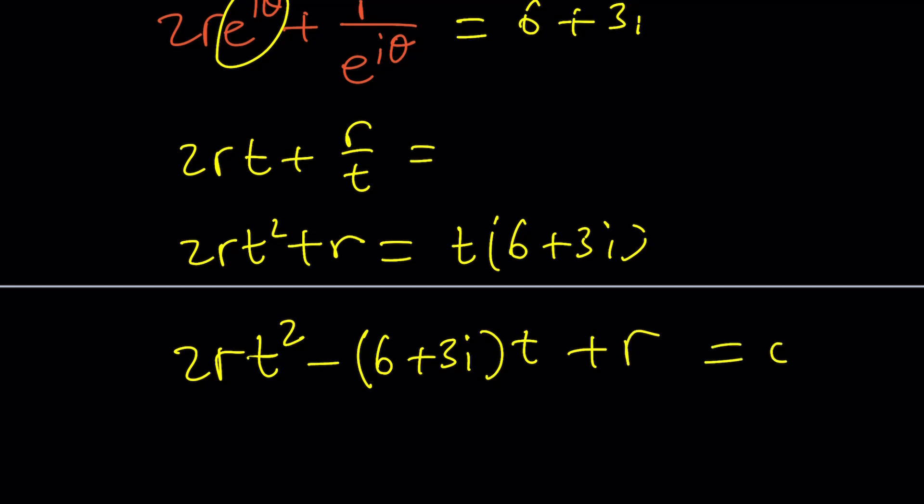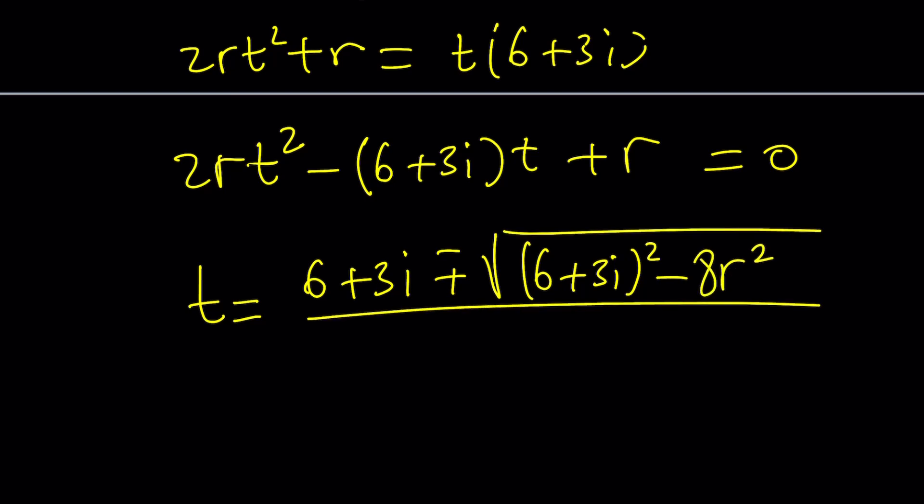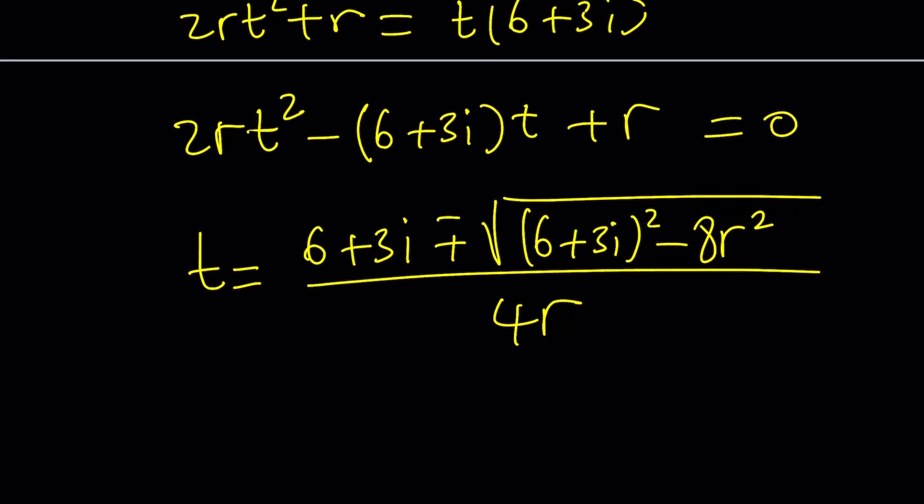Of course, you're looking for t because that's going to give you e to the i theta. So you have to solve this quadratic equation. But when you write the quadratic formula, you get negative b plus minus the square root of b squared minus 4ac. And that's going to be 8r squared. So the problem with that is how do you solve for r? You don't know what r is, so you kind of have to have an idea. I couldn't come up with something meaningful here. But if you do have any ideas, please let me know.